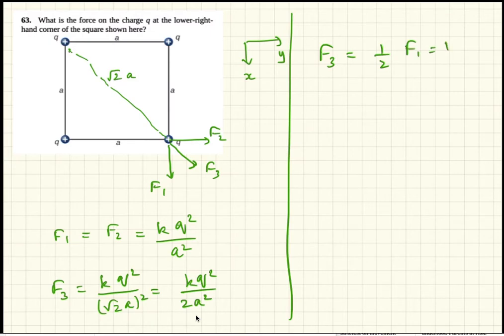Okay, so now let's write them in vector form. So F1 is, we'll call k q squared as F, so F i plus 0 j.